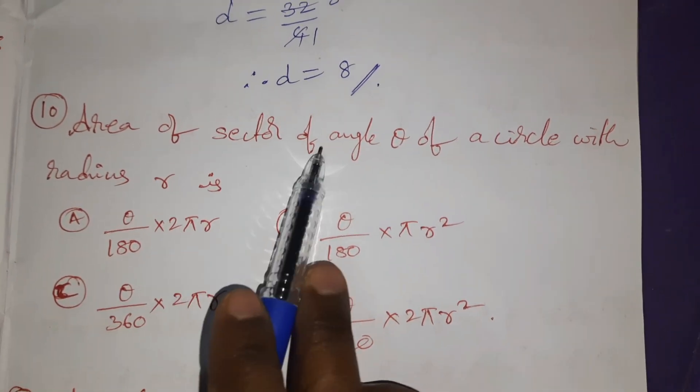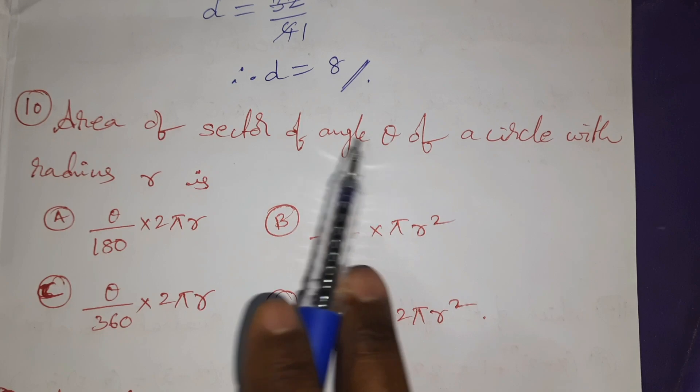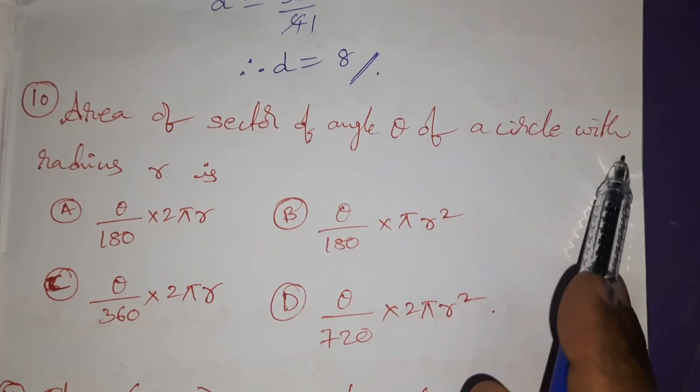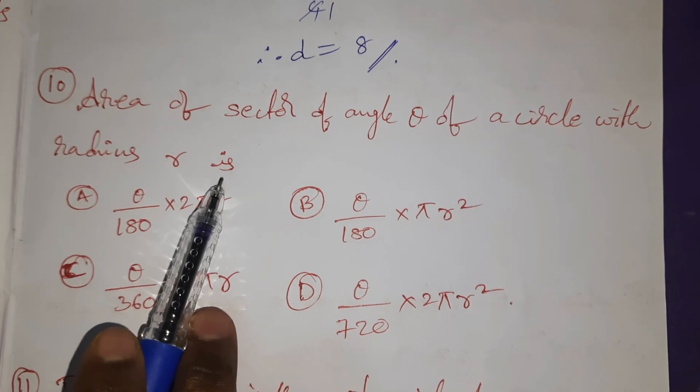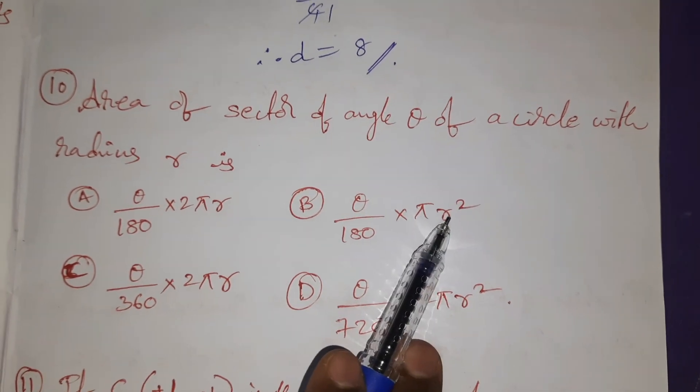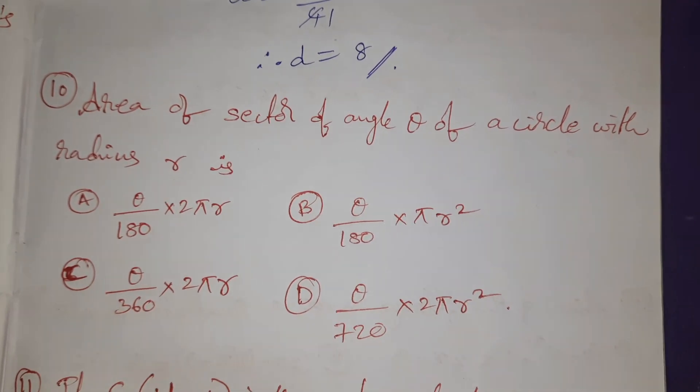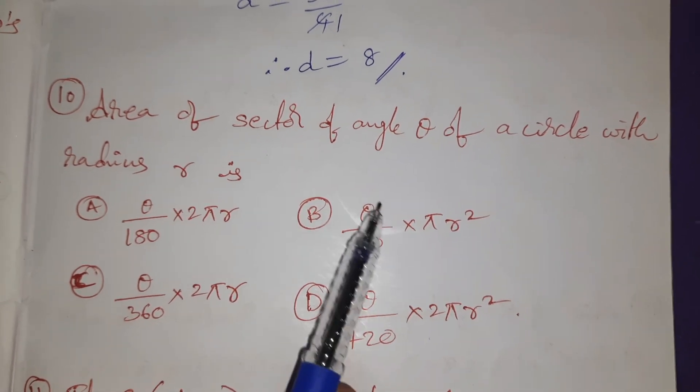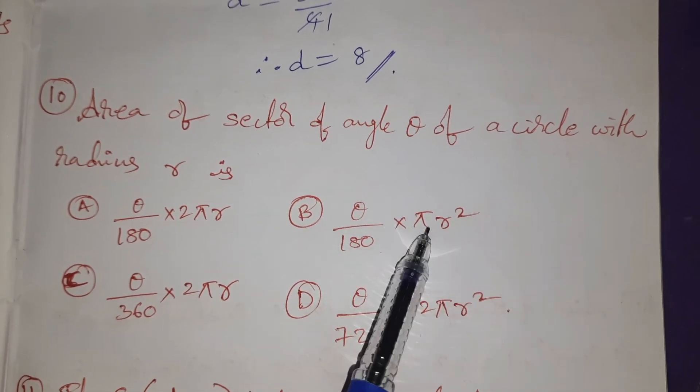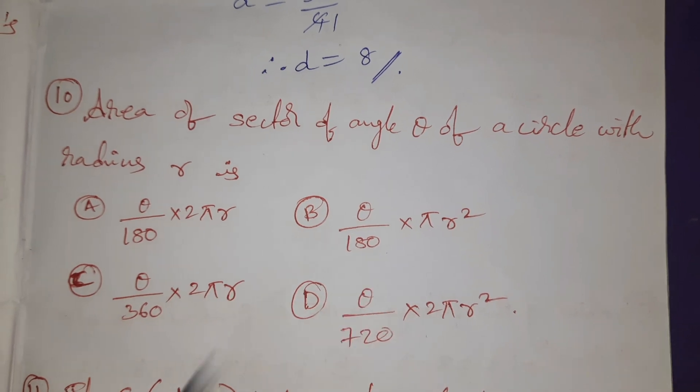The area of sector of angle θ of a circle with radius R is... Area of circle formula is πR². But according to our option, πR² in these two only. But θ/360 × πR² should be. But here, 360 not there.